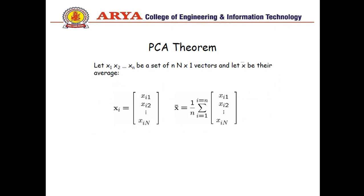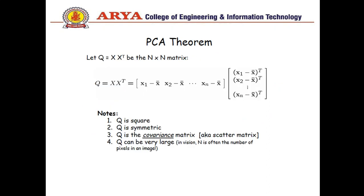The PCA theorem can be understood by this slide. Here we are considering a simple matrix and calculating the mean. Mean is the total number of elements summation divided by total number of elements. Here is a mathematical representation: suppose we have a matrix Q, it can be square, symmetric, or a covariance matrix calculated by matrix into transpose of a matrix.